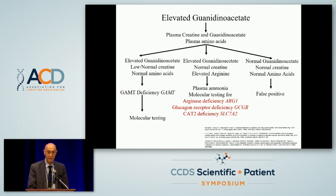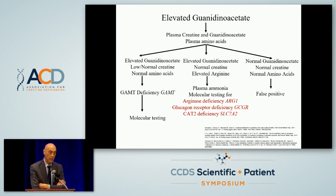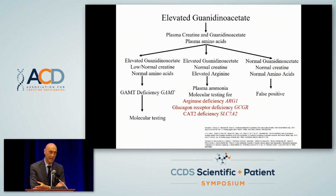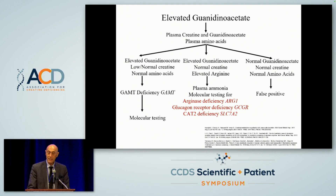Let's go back to the newborn screening blood spot. The American College of Medical Genetics creates algorithms telling pediatricians and newborn screening labs what to do when a marker is increased. Basically, the first thing is: you have elevated guanidino acetate on the blood spot — what do you do next?